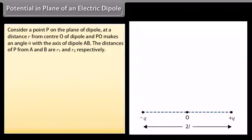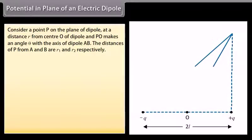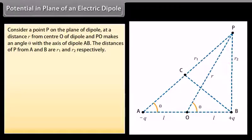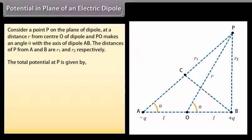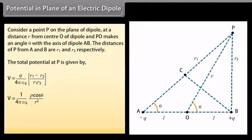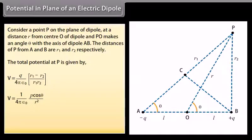For the potential in the plane of an electric dipole, consider a point P on the plane of the dipole at distance R from center O, where PO makes angle θ with the dipole axis AB. The distances from P to the two charges are R1 and R2. The total potential at P is V = (Q / 4πε₀)(R1 − R2)/(R1·R2) = (1/4πε₀)(P cosθ / R²). This is the generalized expression for the potential of a short dipole at any point on its plane.